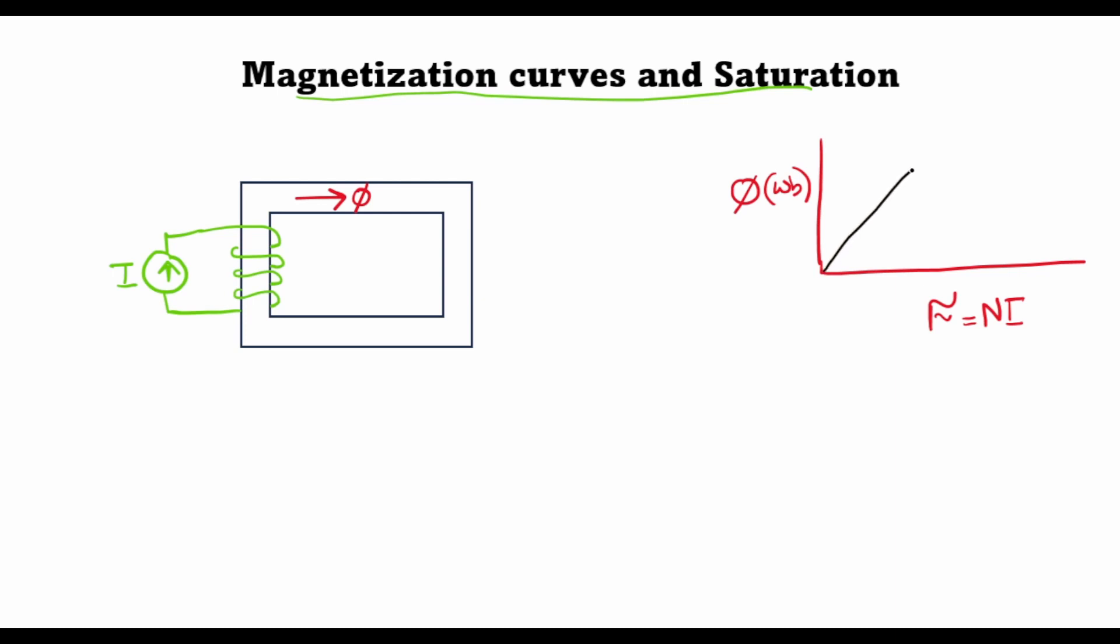If I were to plot a relationship between the two, it would look something like this. In the beginning it is linear with respect to the magnetomotive force, but as the magnetomotive force is increased, saturation starts to set in and the slope of the curve decreases. Eventually there is very little increase in the flux as a function of the magnetomotive force.